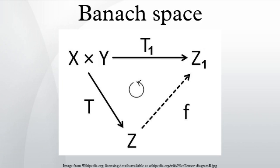Banach spaces are named after the Polish mathematician Stefan Banach, who introduced and made a systematic study of them in 1920 to 1922, along with Hans Hahn and Eduard Helly. Banach spaces originally grew out of the study of function spaces by Hilbert, Fréchet, and Riesz earlier in the century.